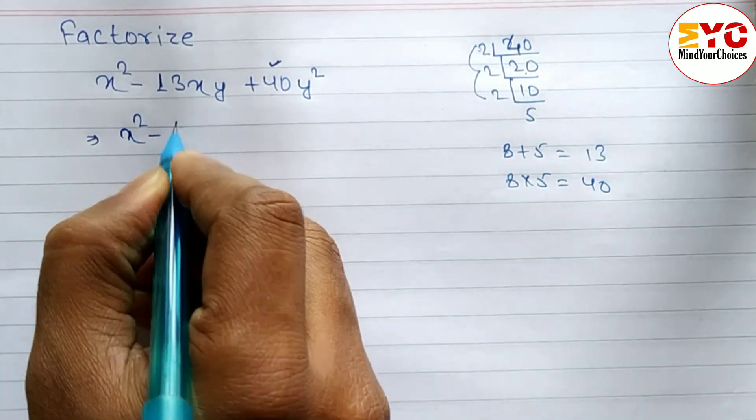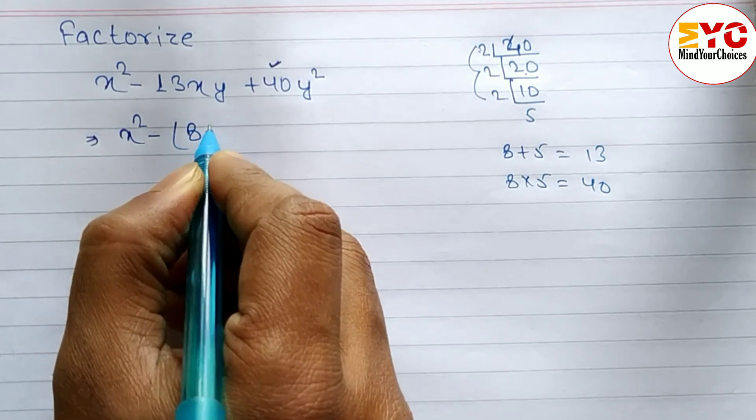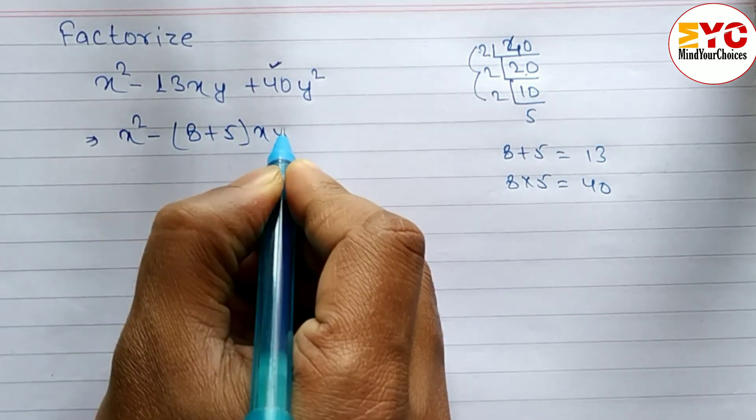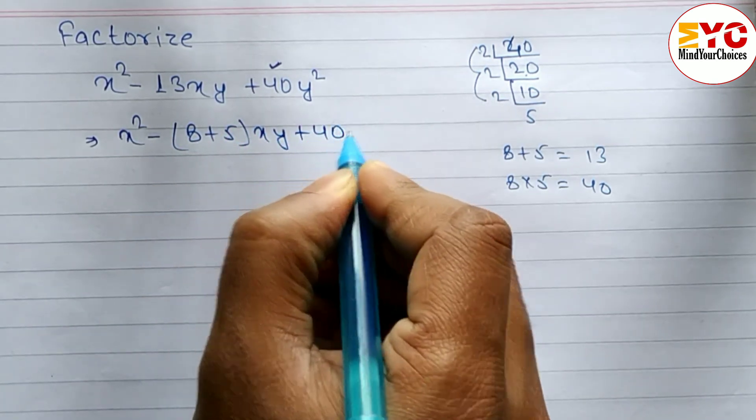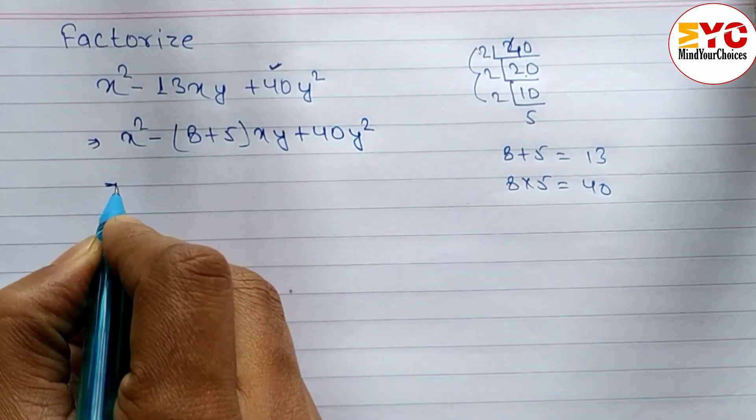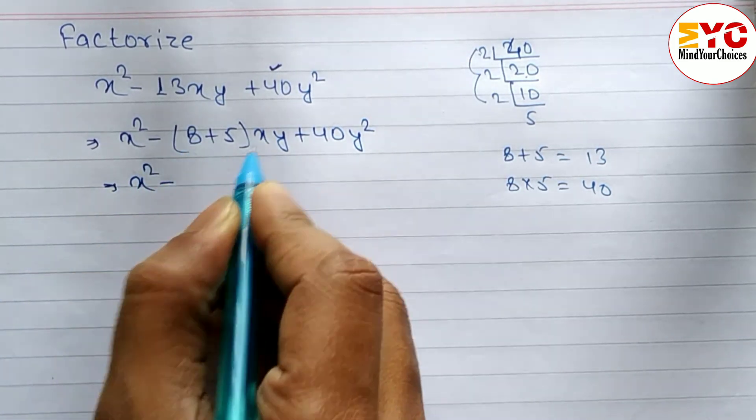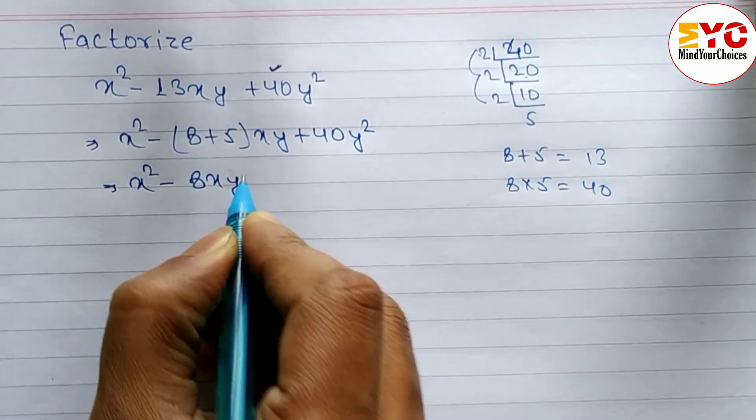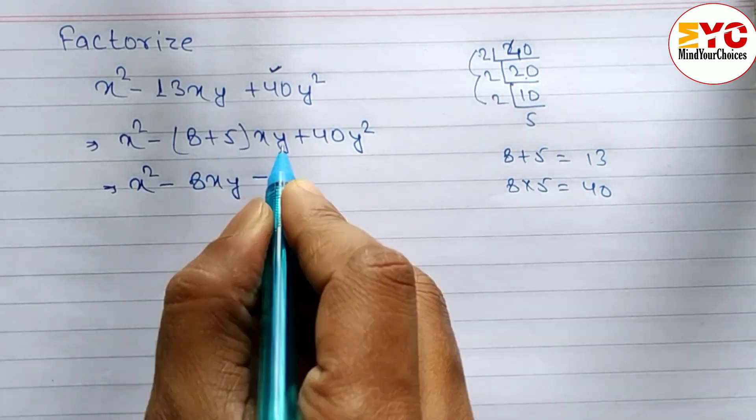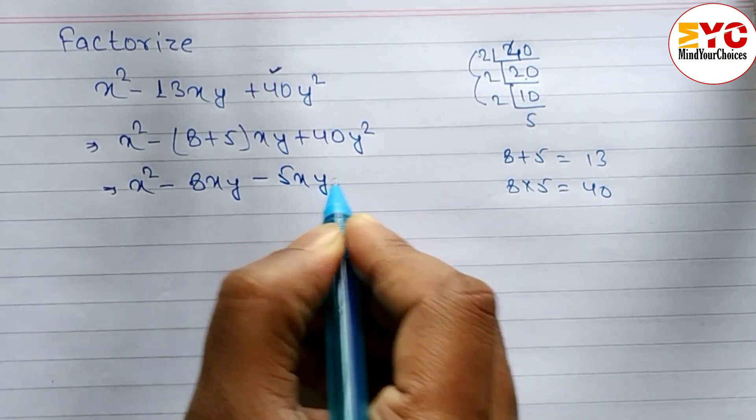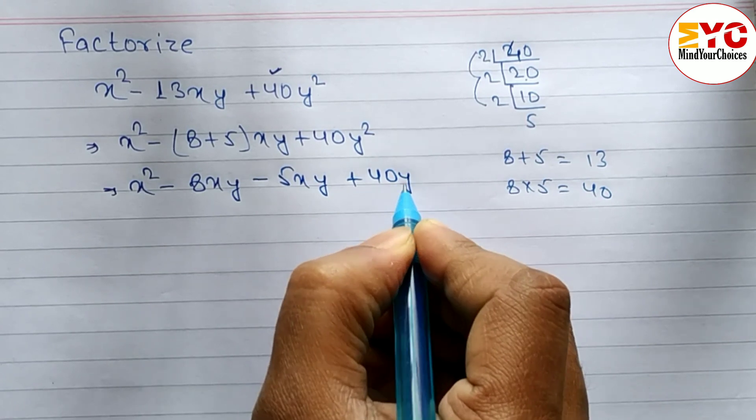So we can write x square minus, in the place of 13, we write 8 plus 5xy, plus 40y square. Now we open the bracket: x square minus 8xy minus 5xy plus 40y square.